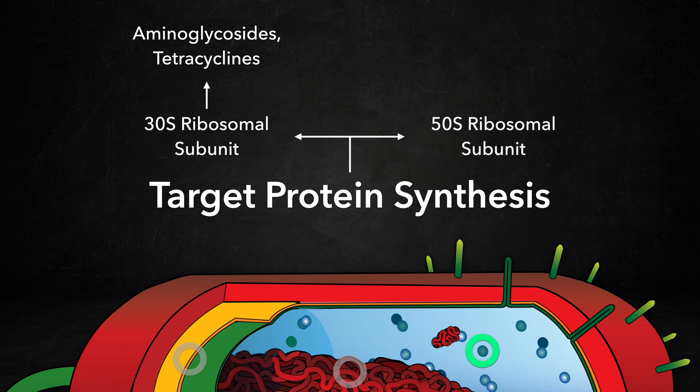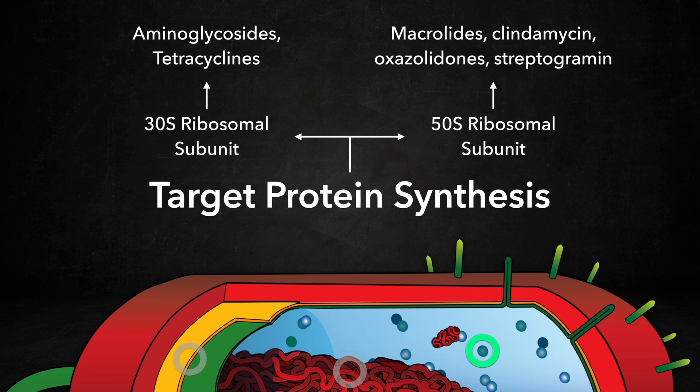The second subgroup targets the bacterial 50S ribosomal subunit, including macrolides, clindamycin, oxazolidinones, and streptogramins.